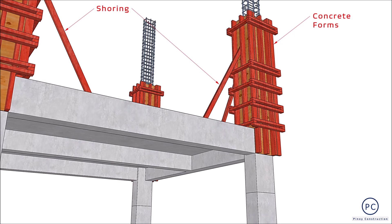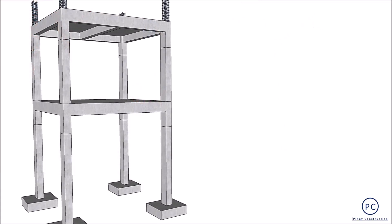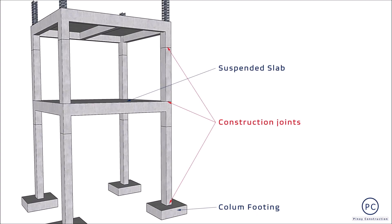At dahil sa paghahati-hati ng buhos ng konkreto, ito ay magre-resulta sa pagkakaroon ng construction joints. Primarily, karaniwan na sa building construction, whether residential, commercial, industrial, at institutional, ang putol ng buhos ay nagaganap sa column.